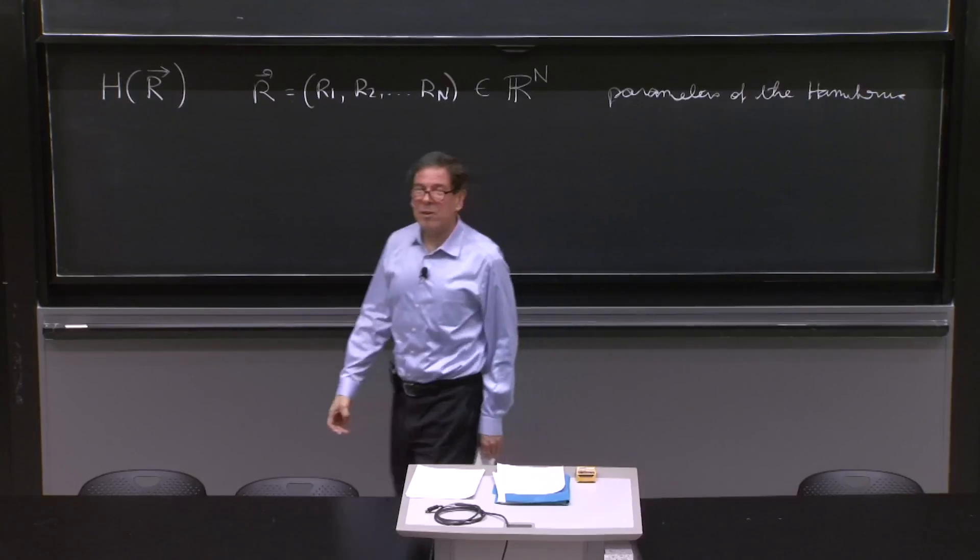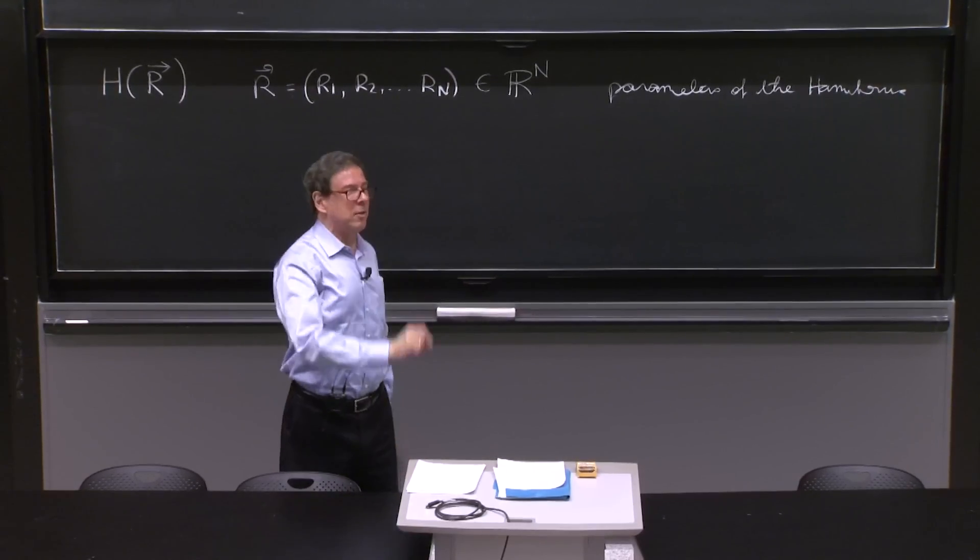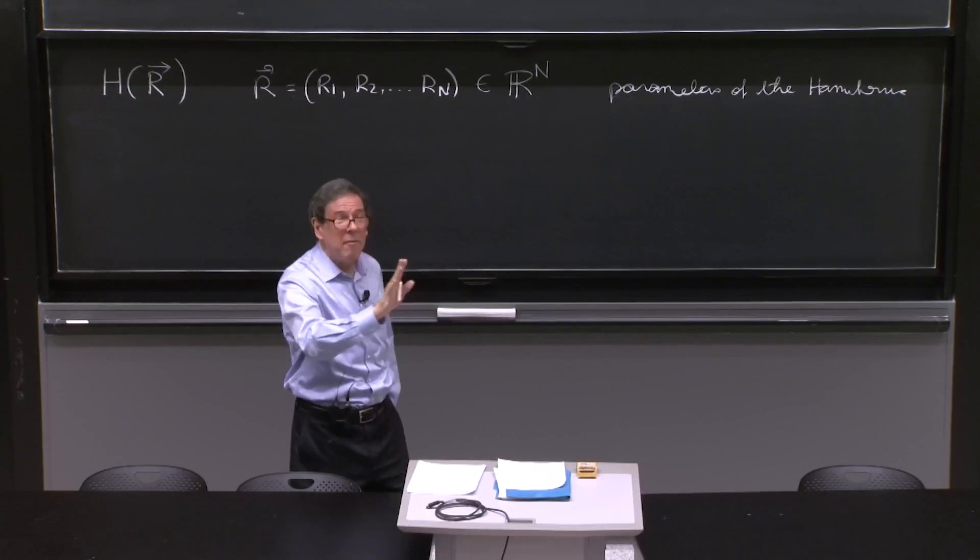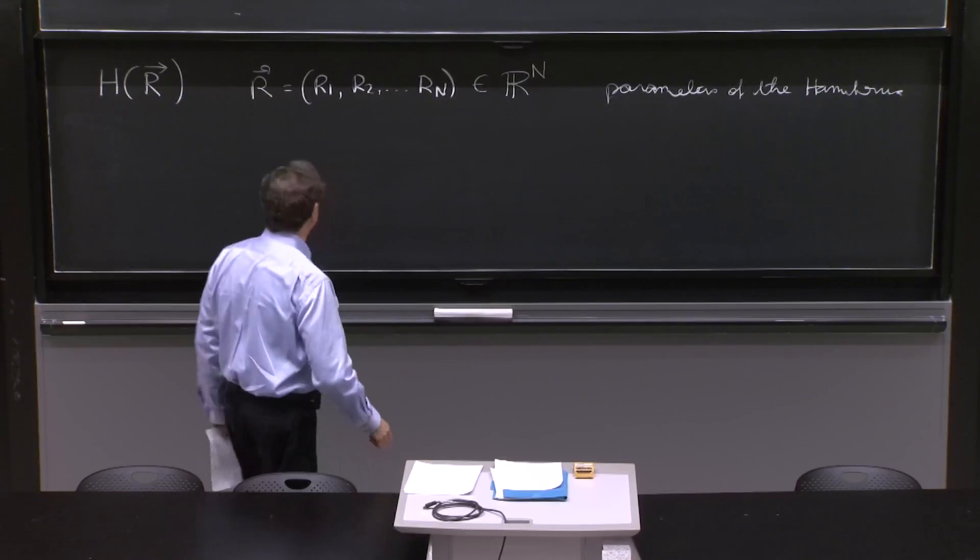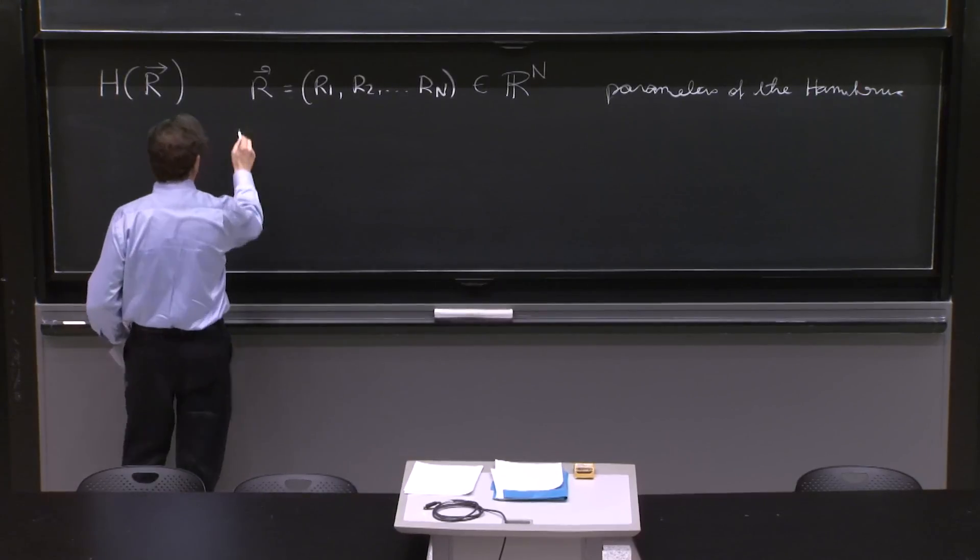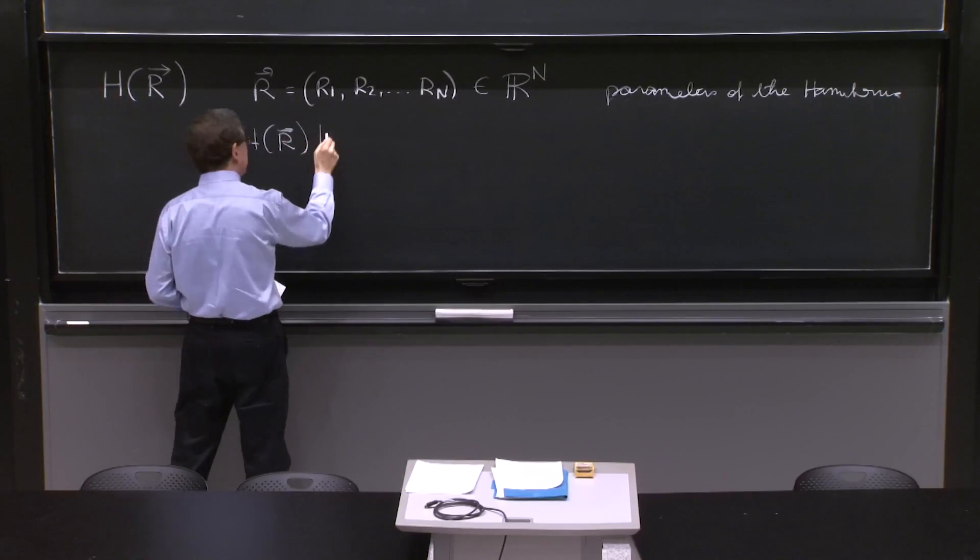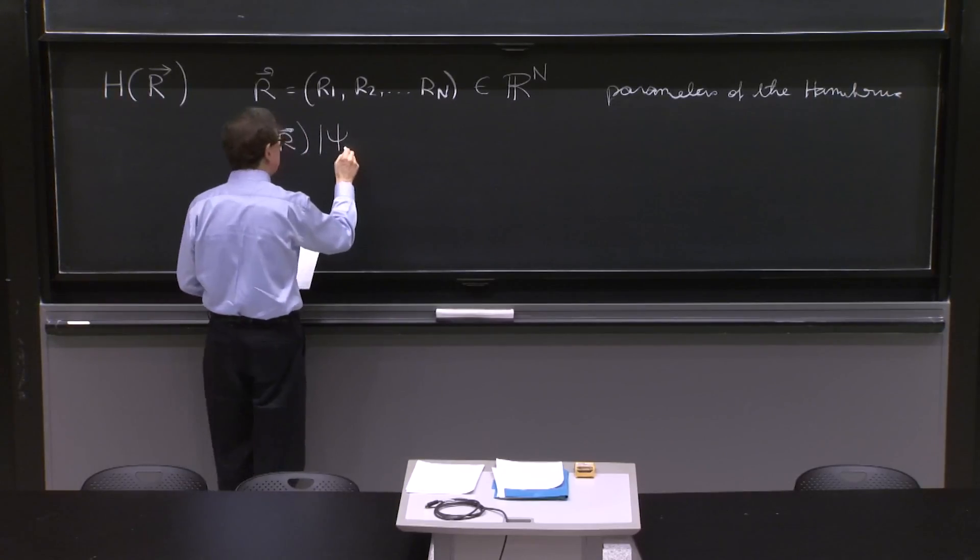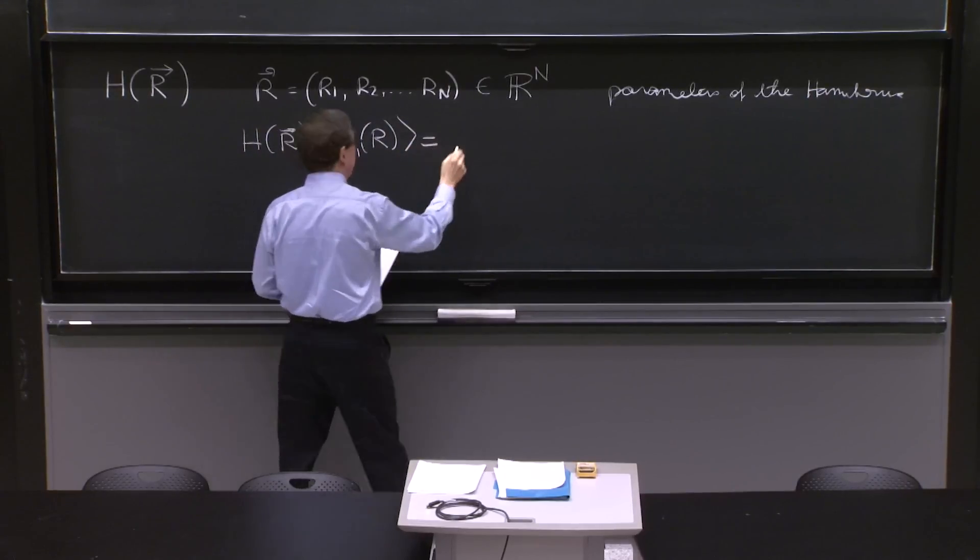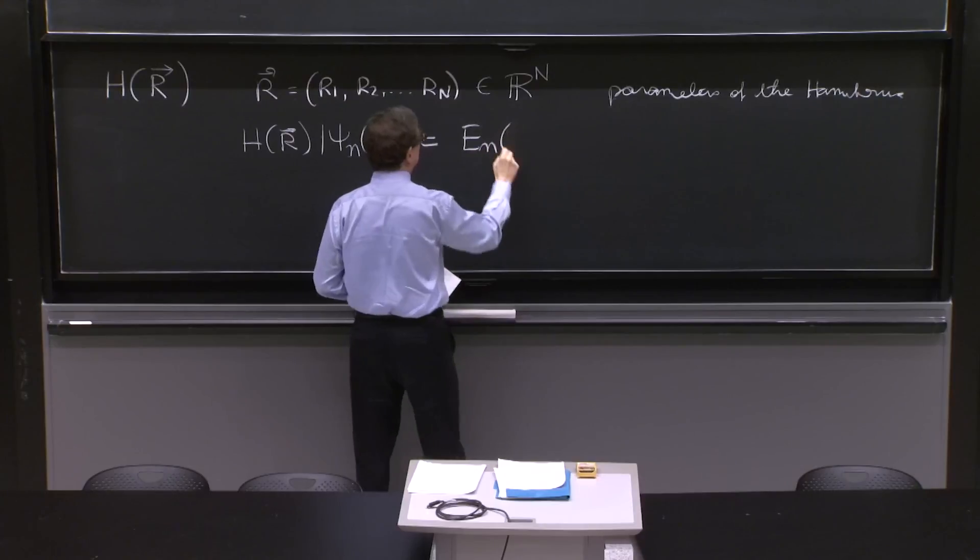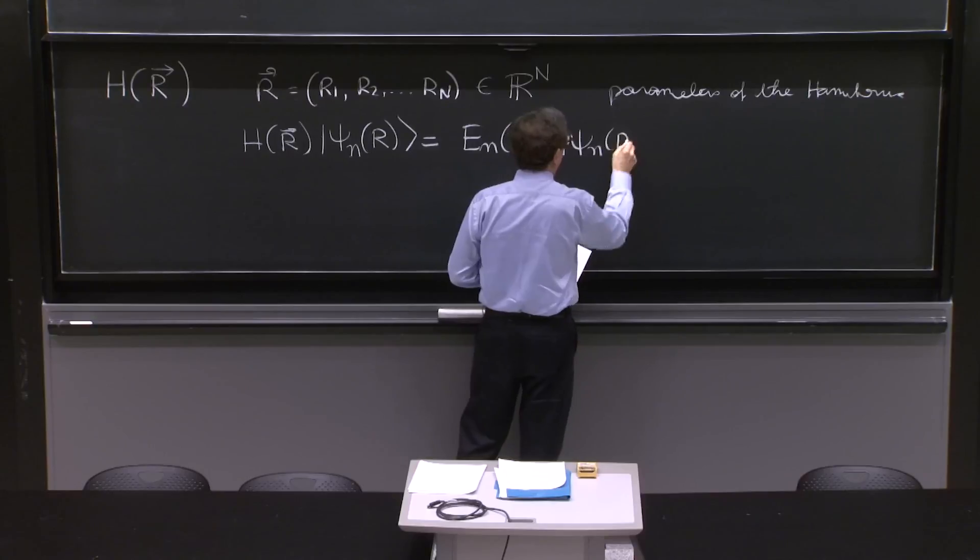And suppose you have learned to solve this Hamiltonian for all values of the parameters. That is, whatever the r's are, you know how to find the energy of the eigenstates. So h of r times, there are some eigenstates, psi n of r, with energies En of r, psi n of r.